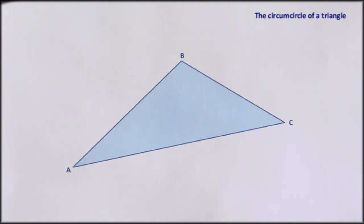I'm going to show you how to construct the circumcircle of a triangle. Now the circumcircle is the circle that touches all three vertices of the triangle, in this case A, B and C. It's short for the circumscribed circle, the circle drawn around the outside of the triangle.